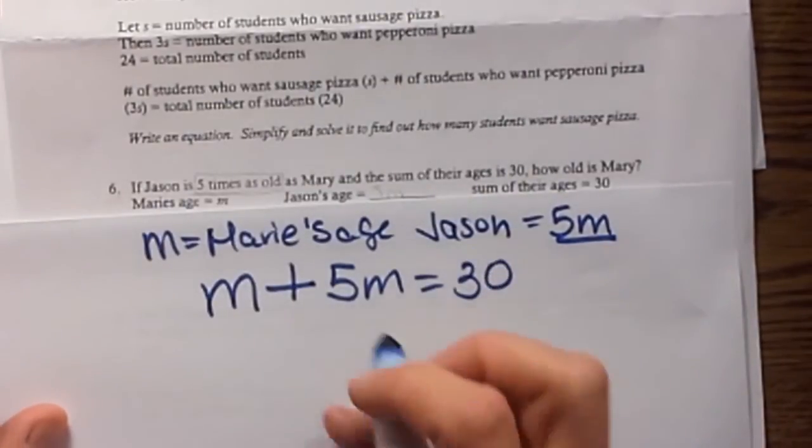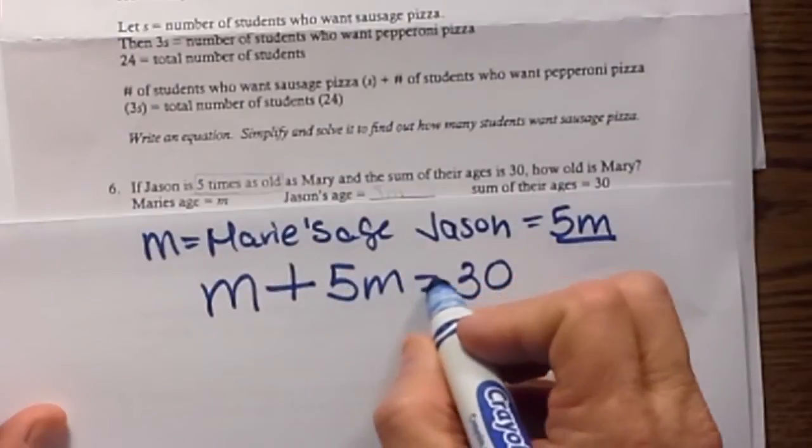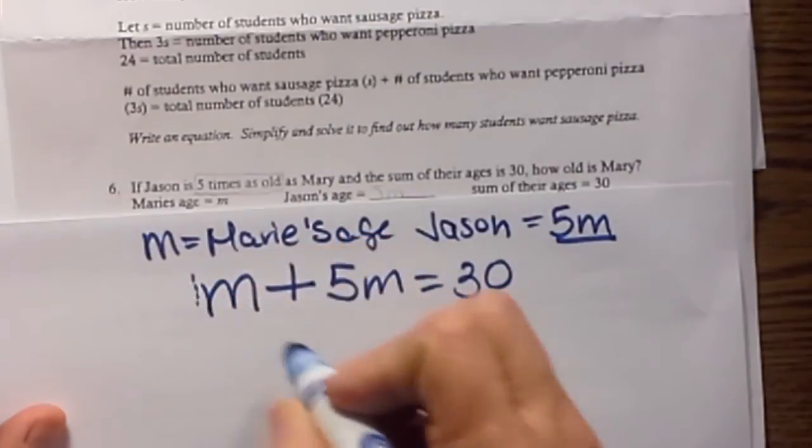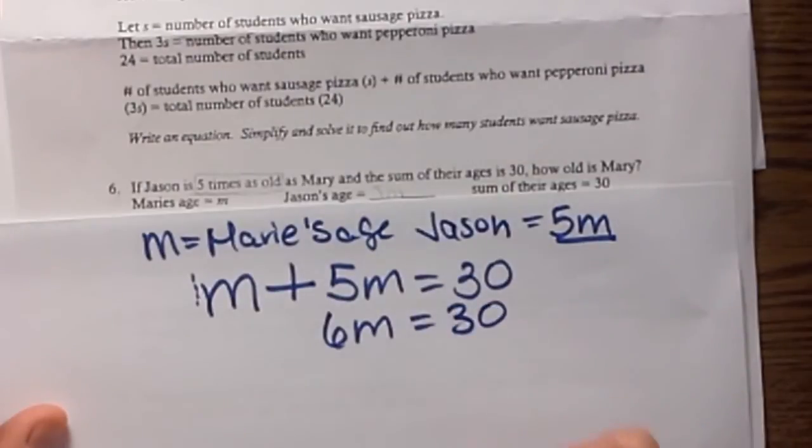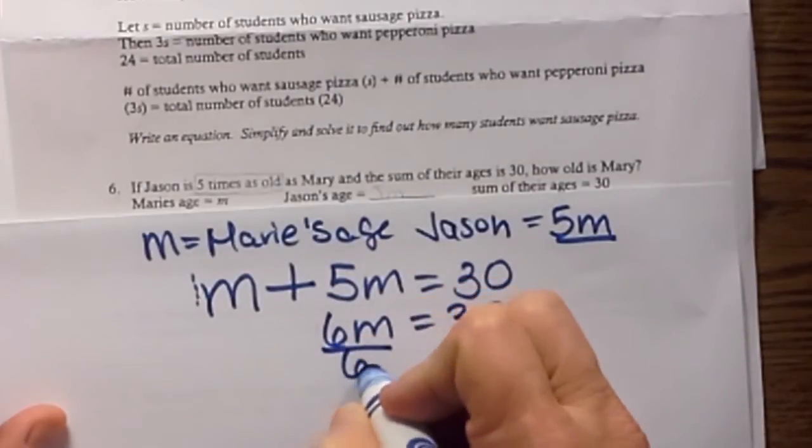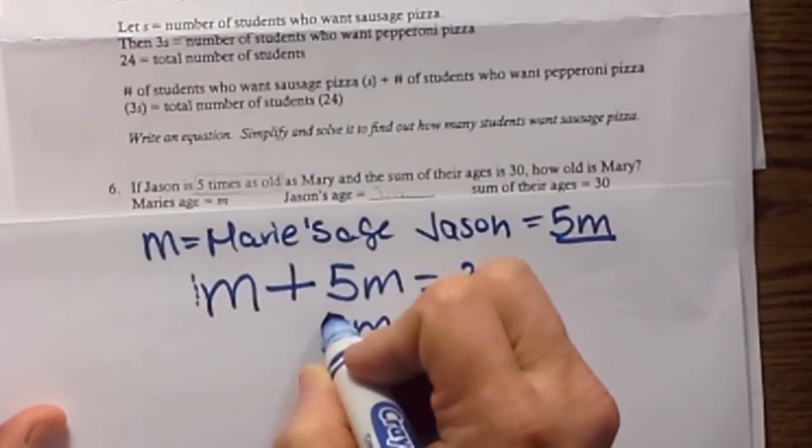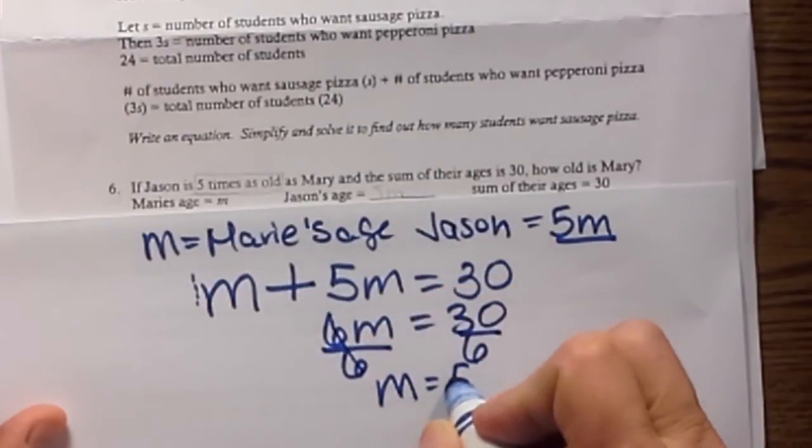Okay, so now let's solve this one. So we have 1m plus 5m. Remember that one is here. That gives us 6m is equal to 30. Now let's divide both sides by 6. And we get m equals 5.